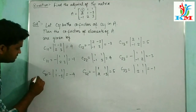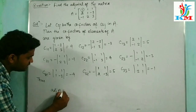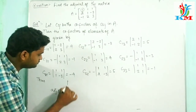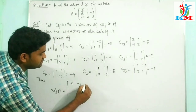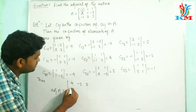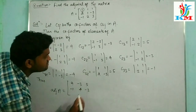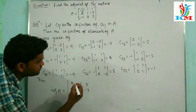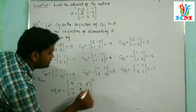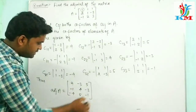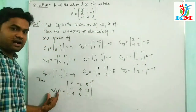Thus, the adjoint of A is equal to the transpose of the co-factor matrix. Look here: the cofactor matrix is [9, -3, 5; -1, 4, -3; -4, 5, -1]. This is the co-factor matrix of A, and its transpose gives the adjoint of A.